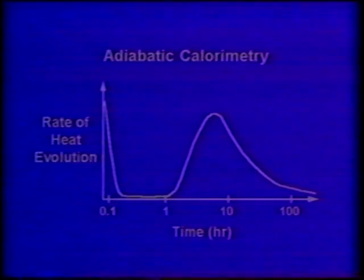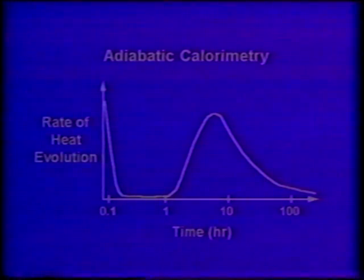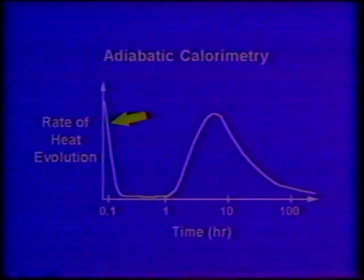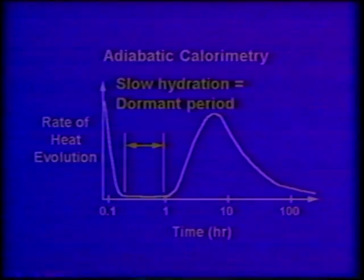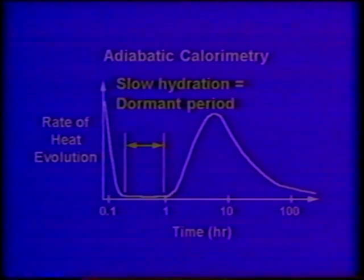The initial dissolution of cement produces a short release of heat, shown by the first peak in the calorimetry curve. After the initial dissolution, hydration products are quickly precipitated on the surface of each cement particle. The layer acts as a protective barrier and temporarily delays the further dissolution of the particle. This slows down the reaction for a period of several hours and is called the dormant period. The existence of the dormant period allows concrete to be transported to the construction site and placed and finished in the forms.